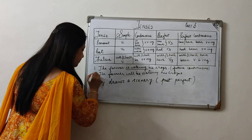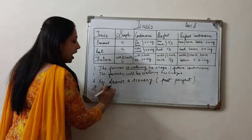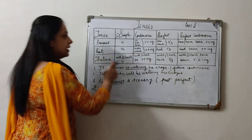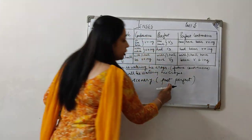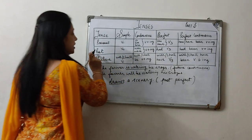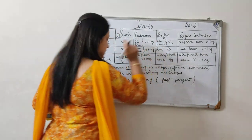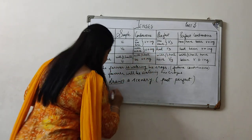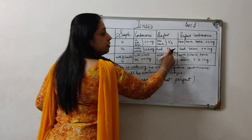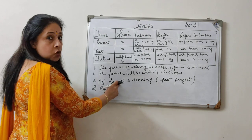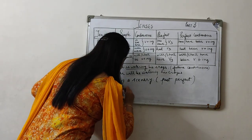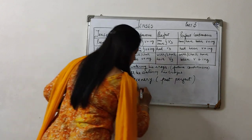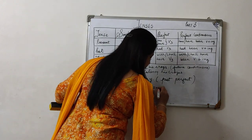Now the second sentence: 'Raj draws a scenery.' Draws is which tense? It is simple present. We have to change it into past perfect. Past perfect is here — past is 'had' with verb third form. What is the verb third form of 'draw'? It is 'drawn'. So: 'Raj had drawn a scenery.'